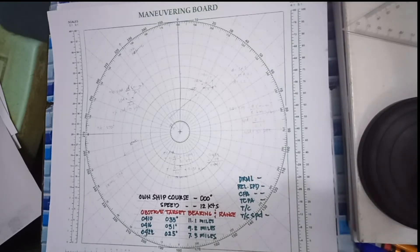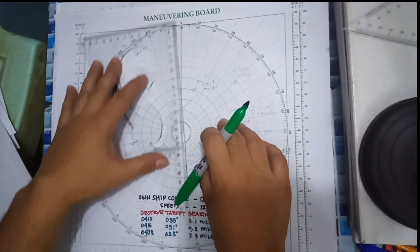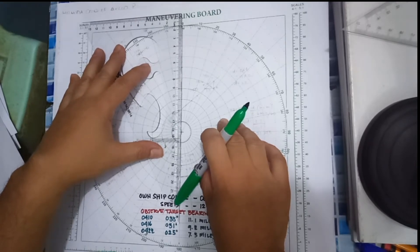Now we are going to plot our course which is 000 degrees or heading north.